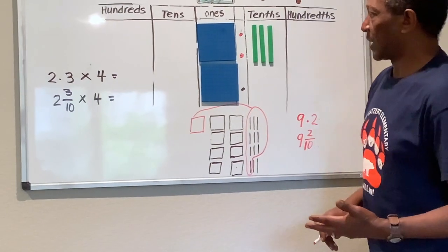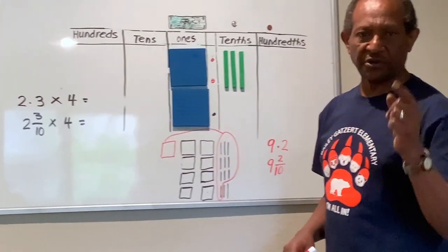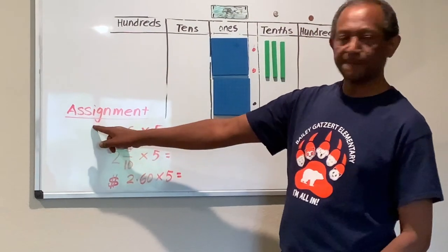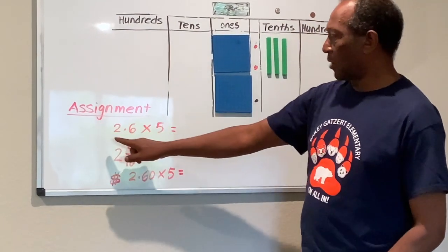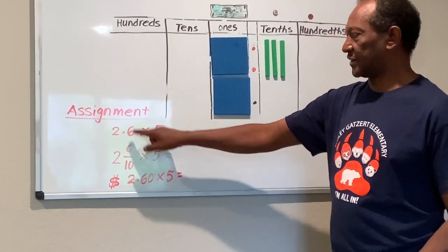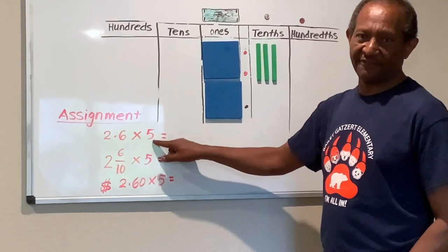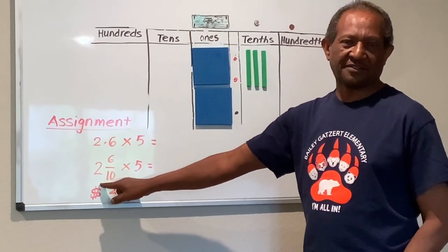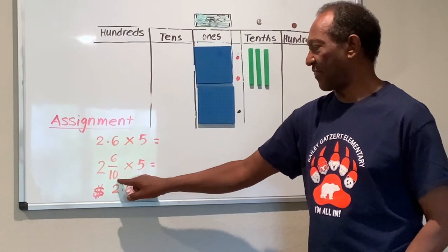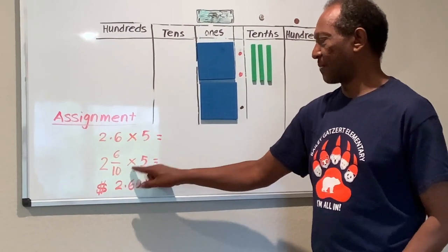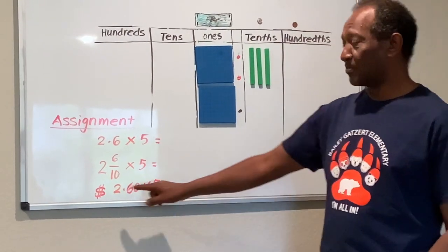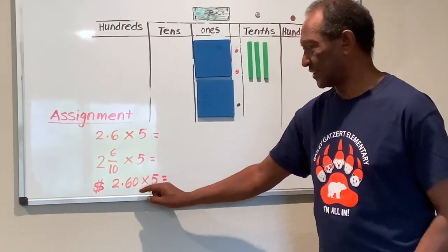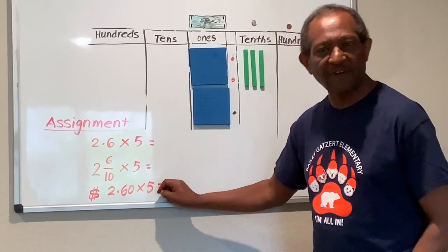Now I'm going to write an assignment for you. You are going to multiply two and six-tenths by five. In fraction it looks like this — two and six-tenths times five. If it's money, it looks like two dollars and sixty cents times five.